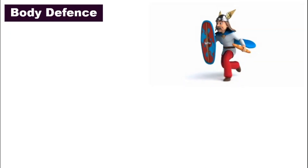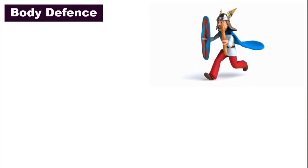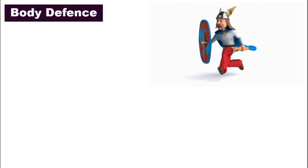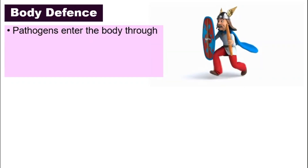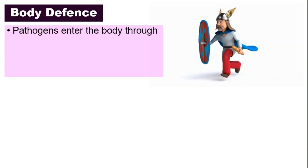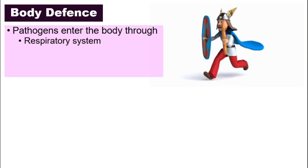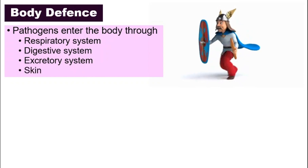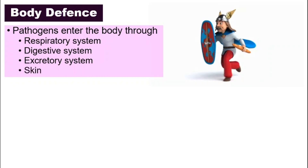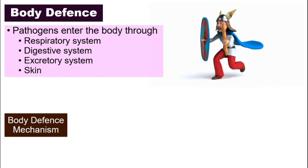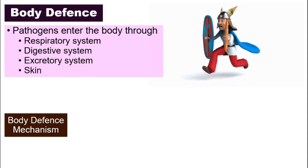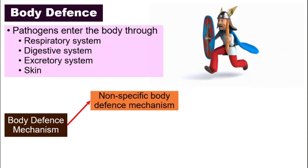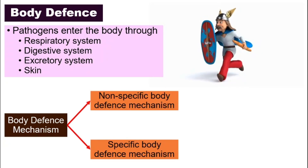If you remember from our last video, how we can get infected with diseases, especially the infectious diseases — it's because of pathogens. And how do pathogens enter our bodies? They can enter through the respiratory system, digestive system, excretory system, and also our skin. Our body is blessed with its own mechanism to defend ourselves and protect us. This defense mechanism can be divided into the non-specific and the specific mechanism.